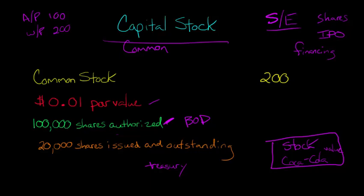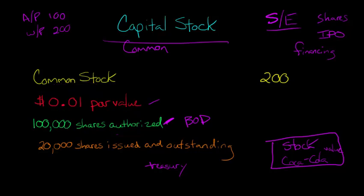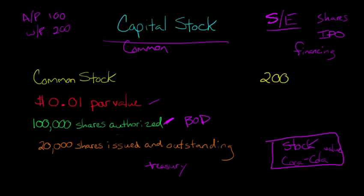In this case, we take that 20,000 shares and multiply it by the one-cent par value per share, and that gives us $200. And $200 is what the firm would have recorded under its common stock.